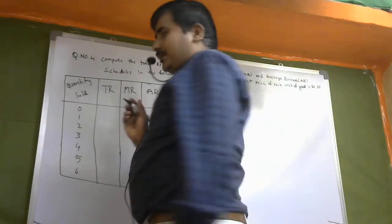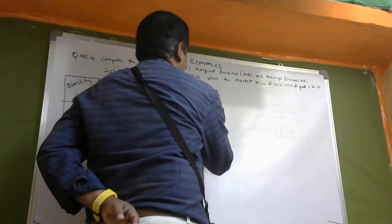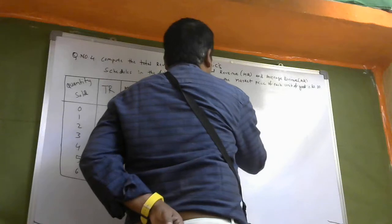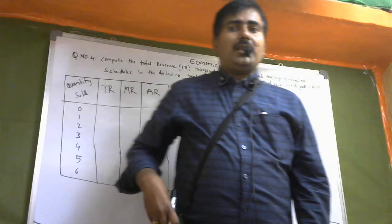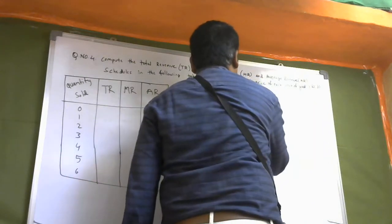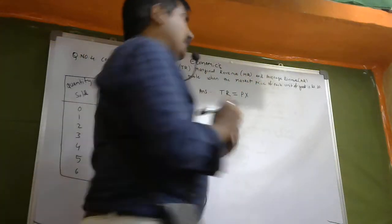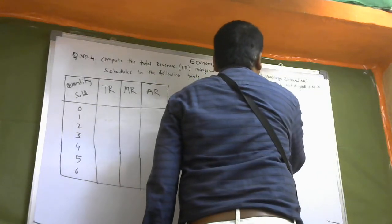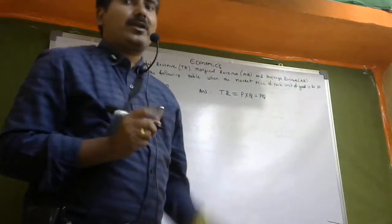So first one, we have started with the formulas. We need to give formulas. So first, TR means Total Revenue. Total Revenue is equal to market price, that is P, into Quantity. So TR = P × Q — PQ is the TR formula.